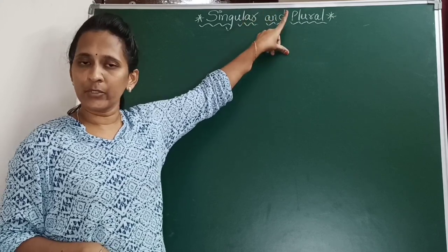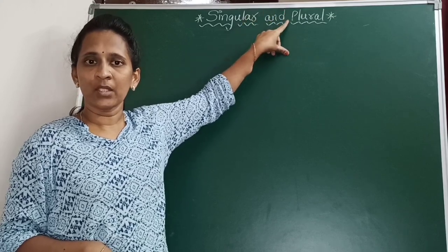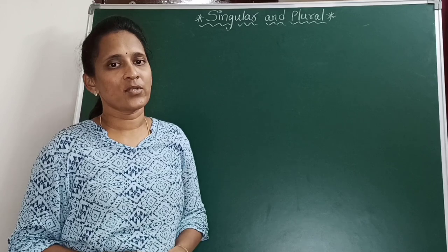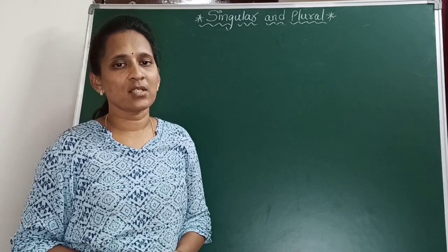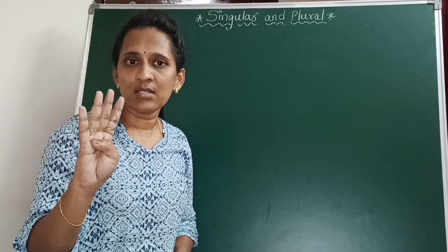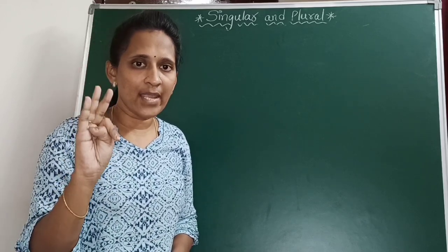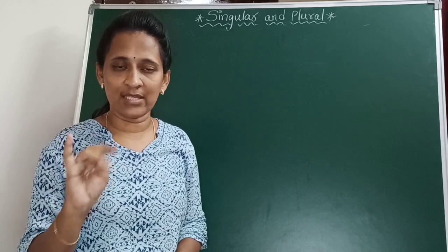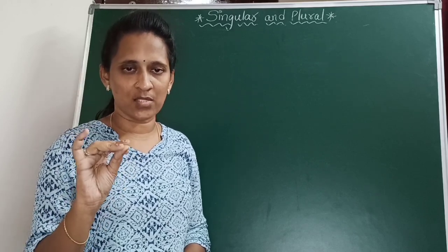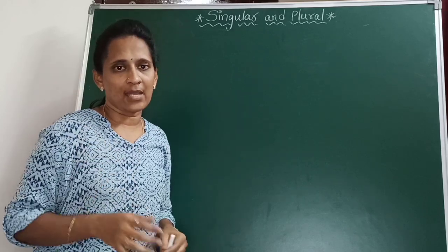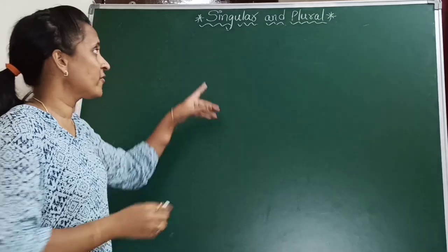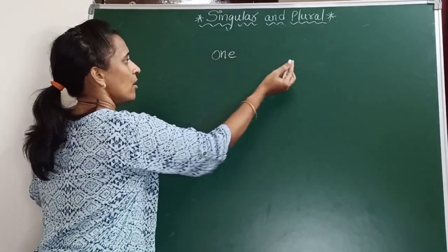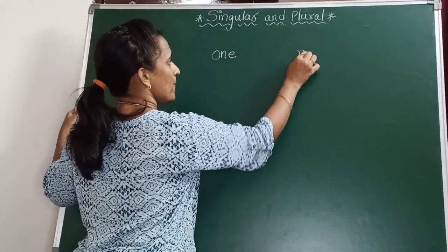The topic is singular and plural. We all know what are nouns, right? Tell me children, what are nouns? Name of a person, name of a place, name of a thing or name of an animal. These are nouns. And these nouns can be of one or many.